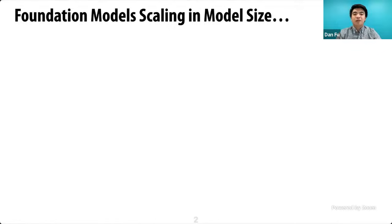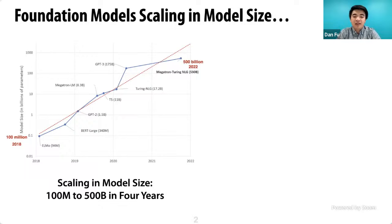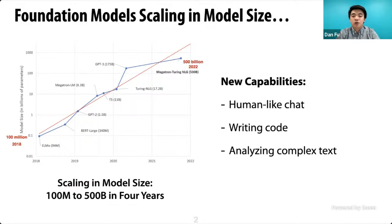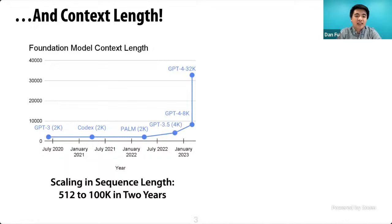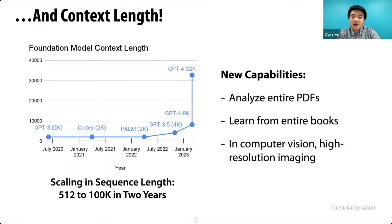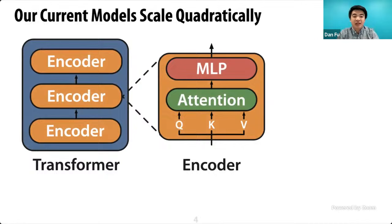Let's look at the broader machine learning landscape. Over the past few years, foundation models have been scaling in two huge ways. They've scaled in model size — from 100 million parameters to 500 billion and a trillion-plus in four years — enabling capabilities like human-like chat systems, writing code, and understanding complex text. They've also been scaling in sequence length, going from 512 to 100,000 in just two years, enabling things like uploading entire PDFs and high-resolution medical imaging.